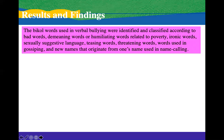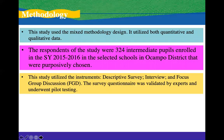Based on the results and findings, the words used in verbal bullying were identified and classified according to bad words, demeaning or humiliating words related to poverty, ironic words, sexually suggestive language, teasing words, threatening words, words used in gossiping, and new names that originate from one's name — which is name calling.